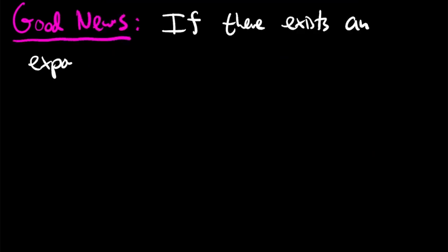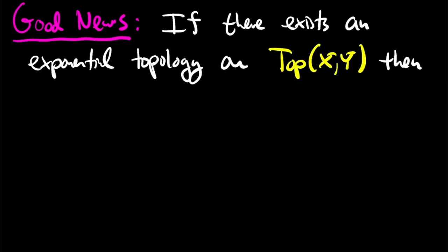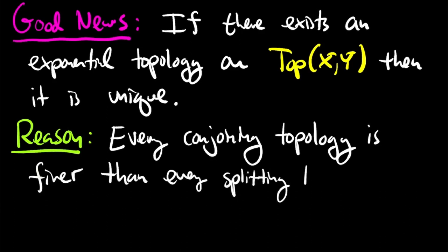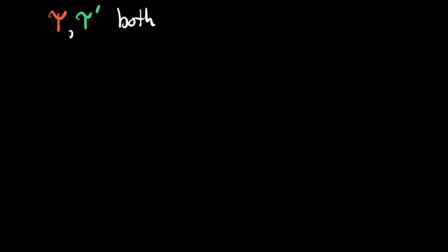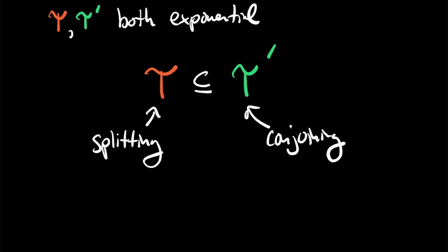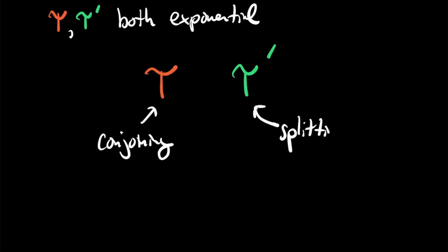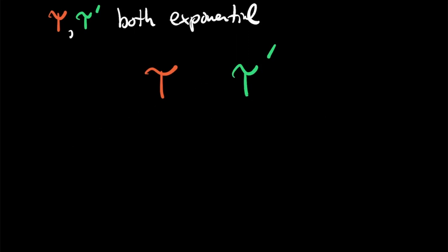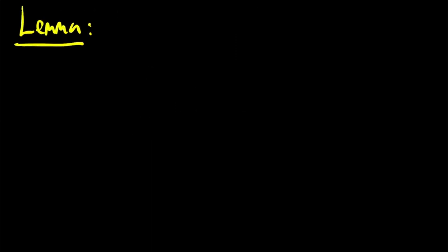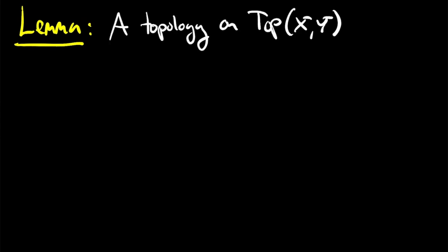The good news is that if an exponential topology exists, it must be unique. The reason is very simple: it follows from the fact that every conjoining topology is comparable to and finer than every splitting topology. So if you have two exponential topologies, call them tau and tau prime — since tau is splitting and tau prime is conjoining, tau is contained in tau prime. But since tau prime is splitting and tau is conjoining, tau prime is contained in tau. From these two statements, tau and tau prime must be the same.